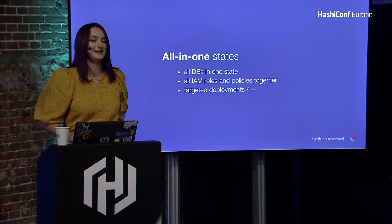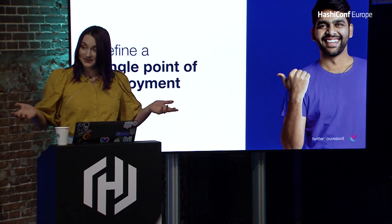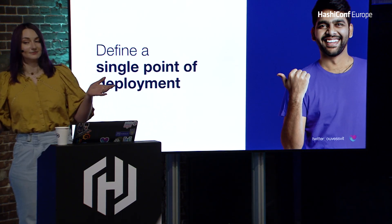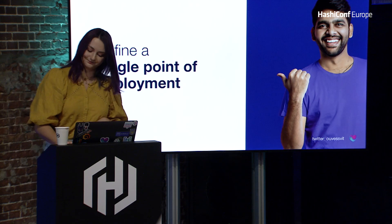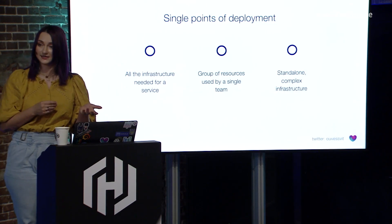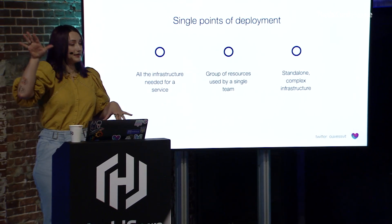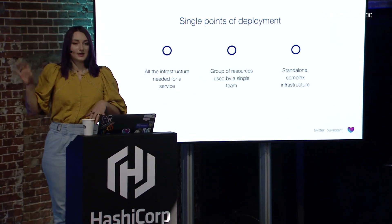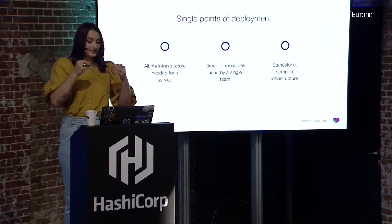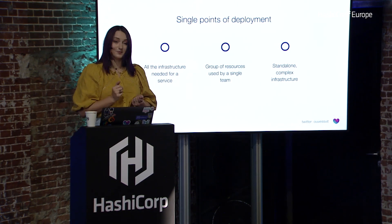So there are things you can take into account and do better. I suggest you define a single point of deployment. What is a single point of deployment? It might be all the infrastructure that is needed for a particular service. Let's say you have a little container app — it needs a database, it needs an IAM role, and it needs a Lambda function. Those things are the infrastructure needed for that container app. That will be your single point of deployment.